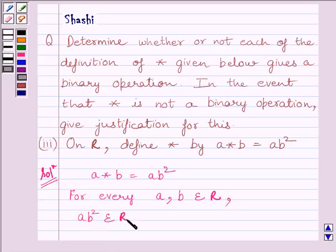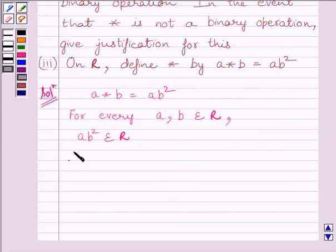Here, R is the set of real numbers. So we can write, A star B is equal to AB square. This is given in the question. And AB square, we know, belongs to the set of real values.